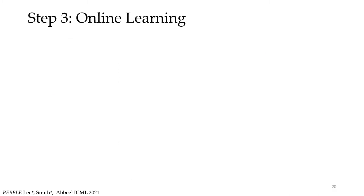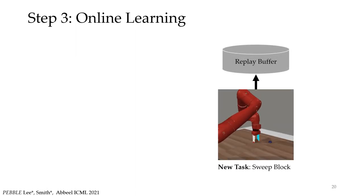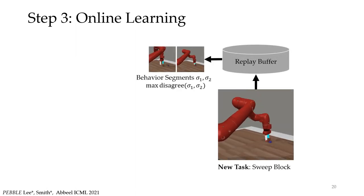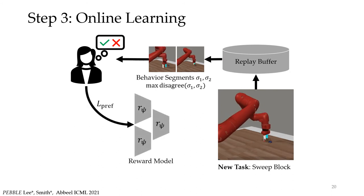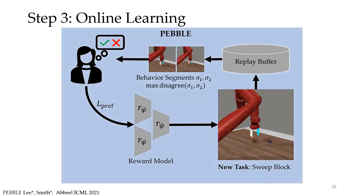Finally, we need to actually learn policies. Starting with the new task, we can collect some data, extract behavior segments via disagreement, show them to users, and use their feedback to train an ensemble of reward models. We iteratively repeat this process to learn a better reward function and train the policy. This forms the basis of the previously state-of-the-art Pebble algorithm.